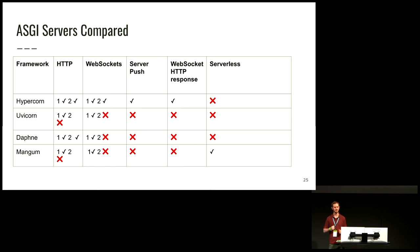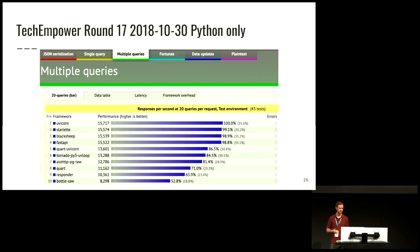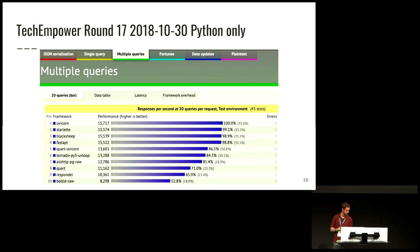Most people are actually more interested in performance. For ASGI frameworks in general, this has been one of the most exciting things for the community. Looking at the TechEmpower benchmarks — the top 10 Python entries — six of those are ASGI-based, and the top two are ASGI. Two more are async, and it's only Tornado and Bottle that are WSGI. So ASGI has made quite a name for itself.